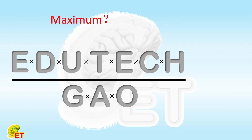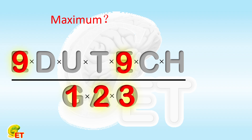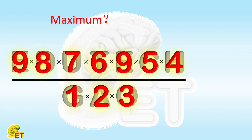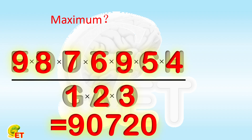Let's first find the maximum value, because this part is relatively simple. The 3 numbers in the denominator should be selected as the smallest: 1, 2, and 3. The rest are in the numerator. The only thing to notice is that there are 2 e's in the numerator. In order to make the result as large as possible, the largest number must be selected for e, which is 9. The order of the others really doesn't matter. The final result is 9×8×7×6×9×5×4 divided by 1×2×3, which equals 90,720.